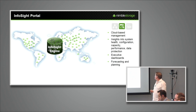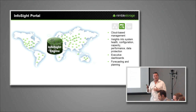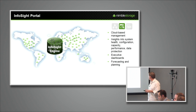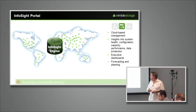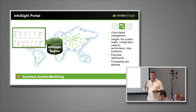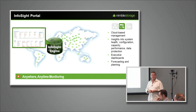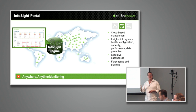The InfoSight portal is a cloud-based management system that allows customers to view all of this information. They can manage support cases, search KB articles, see projections on capacity trending and when they're going to run out of storage, and when they need CPU and cache upgrades. There's even a tool that allows them to plan their replication bandwidth requirements — specifying arrays, desired RPOs like five-minute intervals, and InfoSight will tell them what WAN link bandwidth they need to achieve that RPO on their DR array.